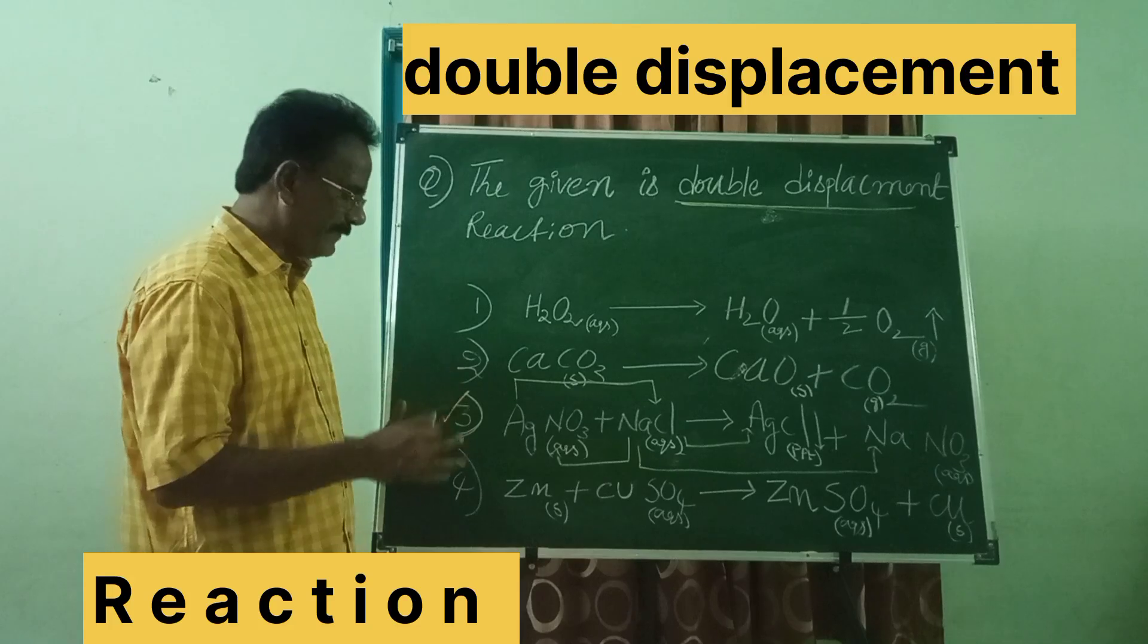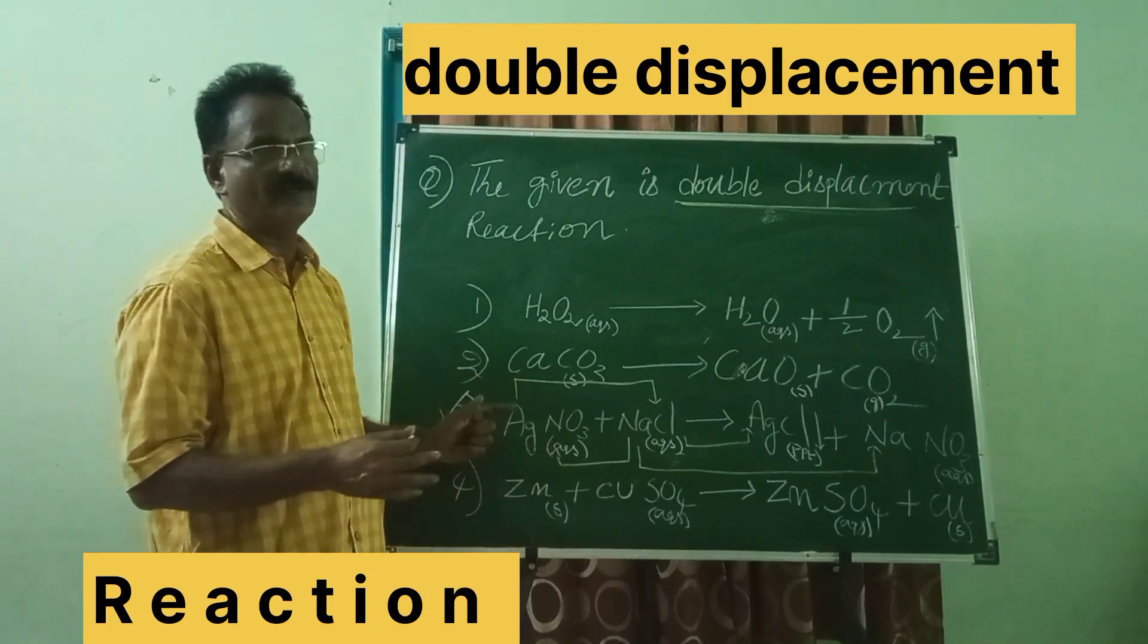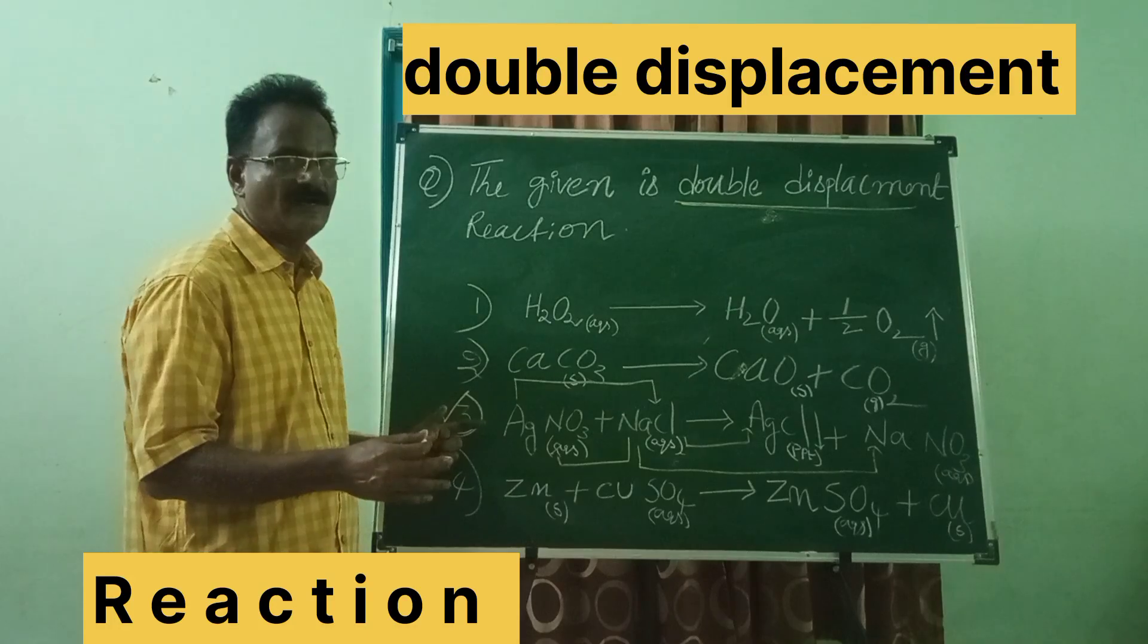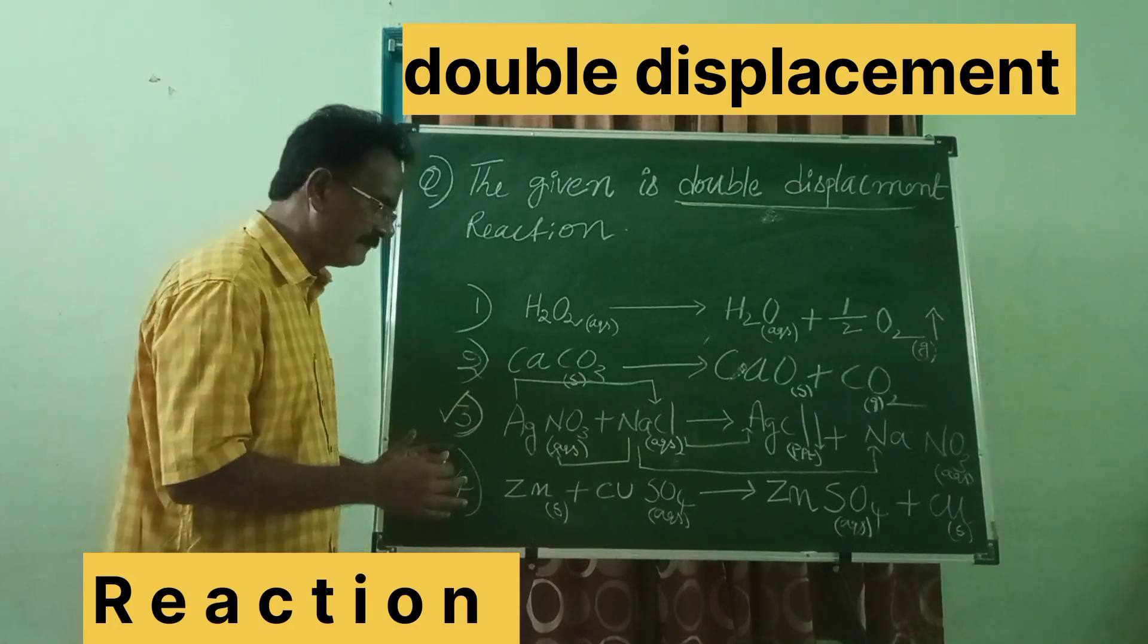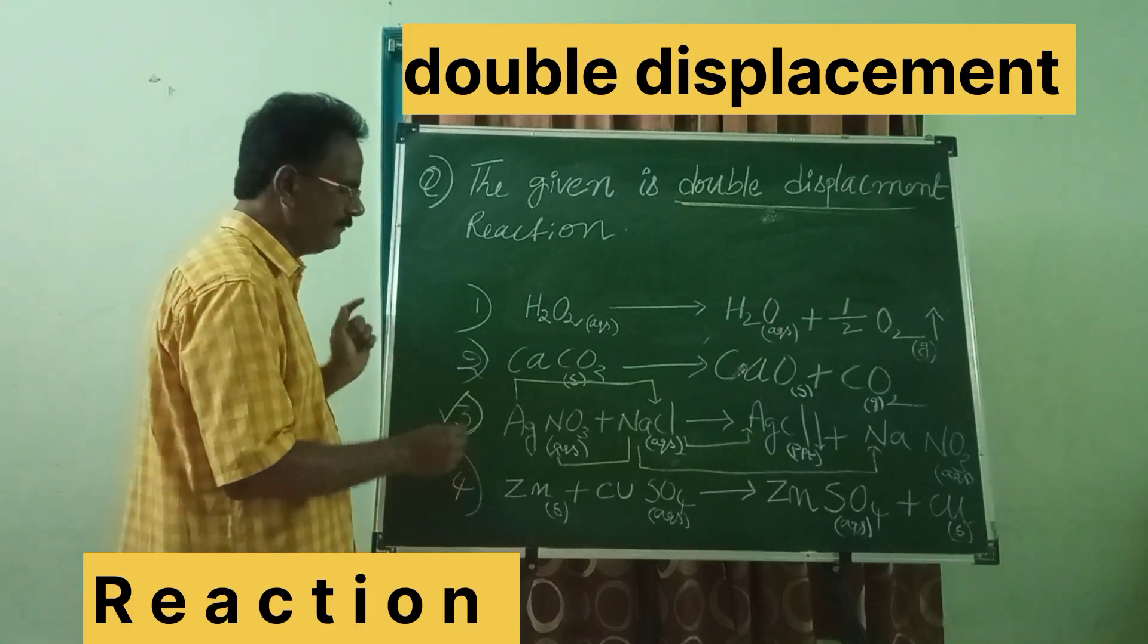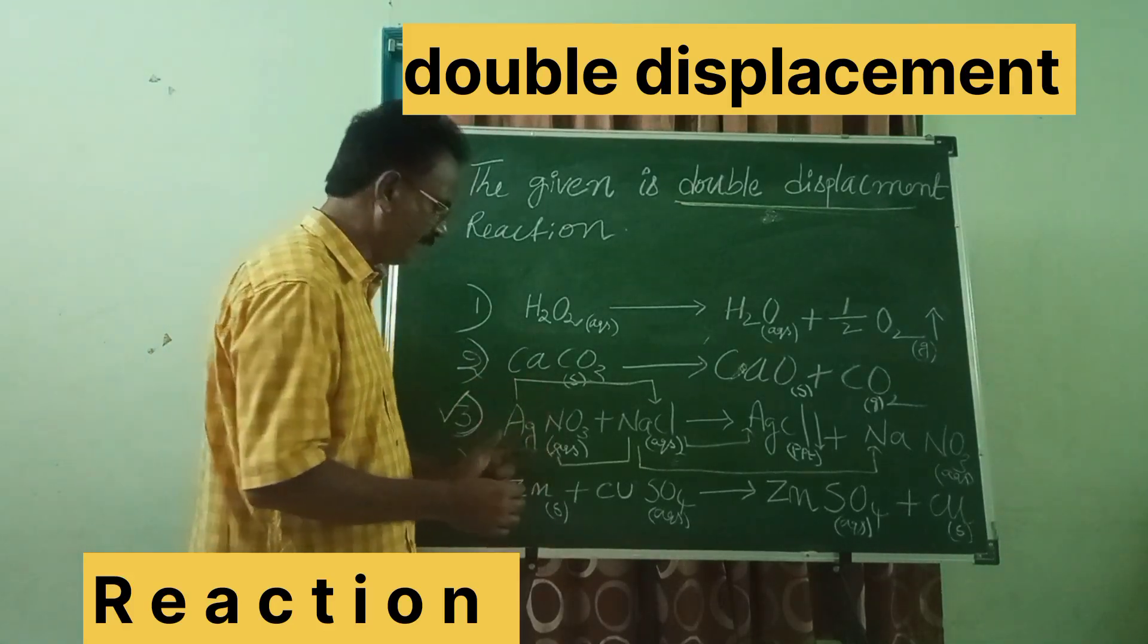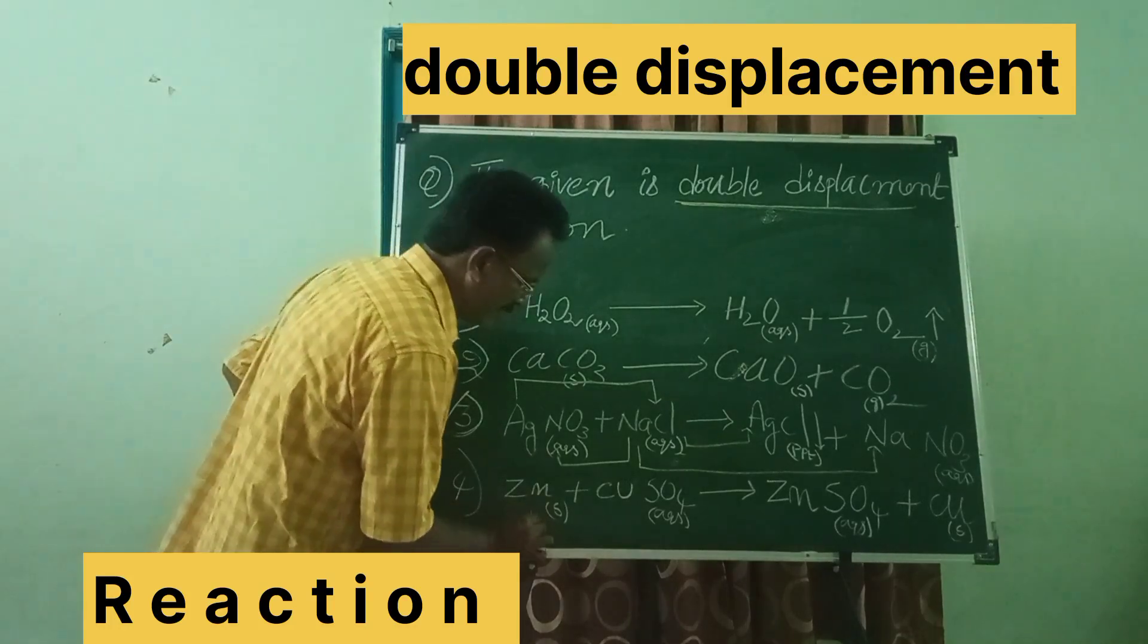When you compare the reactivity of zinc and copper, zinc is more reactive than copper. So, zinc is displacing copper from copper sulfate and forming as zinc sulfate.